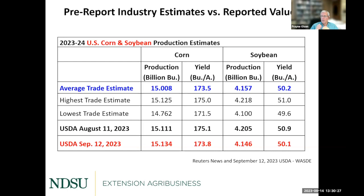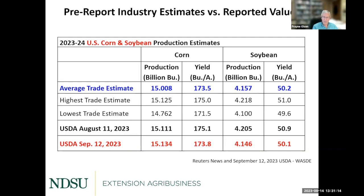Looking at yield numbers specifically: the blue line is the average trade estimate, the highlighted black is last month, and the red is the actual number received. From a yield standpoint, 173.5 vs. 173.8 bushels per acre for corn — very similar to last year's yields. The difference is total production went up due to increased acreage. On the soybean side, 50.2 vs. 50.1 — spot on what private analysts expected. Total soybean production numbers were very similar, so there was not a lot of shock value there.